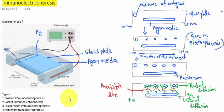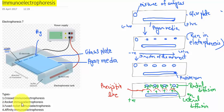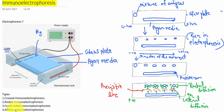The immunoelectrophoresis is of four types. First is crossed immunoelectrophoresis. Second is rocket immunoelectrophoresis. Third is fused rocket immunoelectrophoresis. And the fourth one is affinity immunoelectrophoresis.